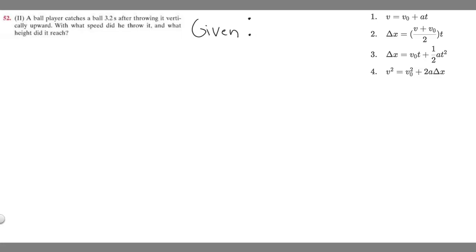The player catches the ball 3.2 seconds after throwing it vertically upward. So we're given a time, so let's write that down. Time equals 3.2 seconds. And we're told he's throwing it upward, so we know the force of gravity is going to be acting on the ball. So acceleration is equal to the force of gravity, which is minus 9.8 meters per second squared.